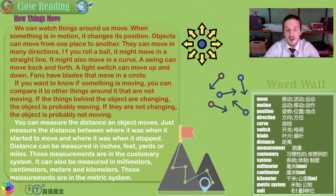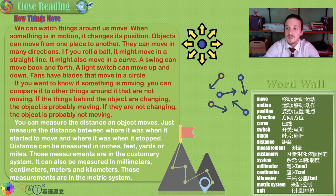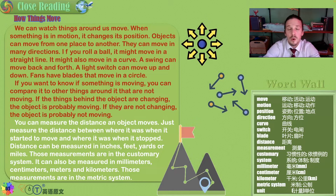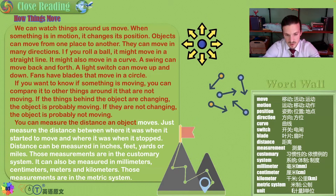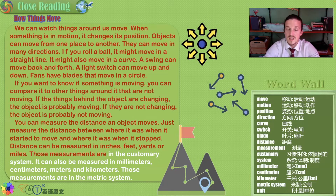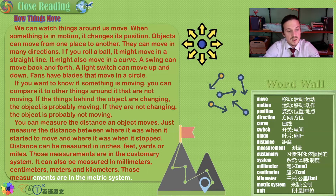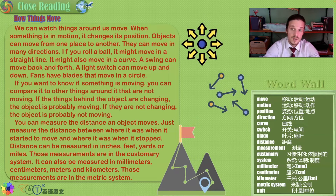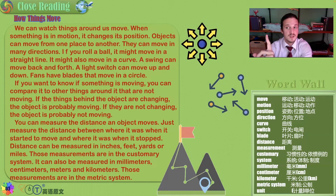If the things behind the object are changing, the object is probably moving. If they're not changing, the object is probably not moving. We know this intuitively — we don't really need to be taught this. But you can measure the distance an object moves. Just measure the distance between where it started and where it stopped. This is where science comes in.